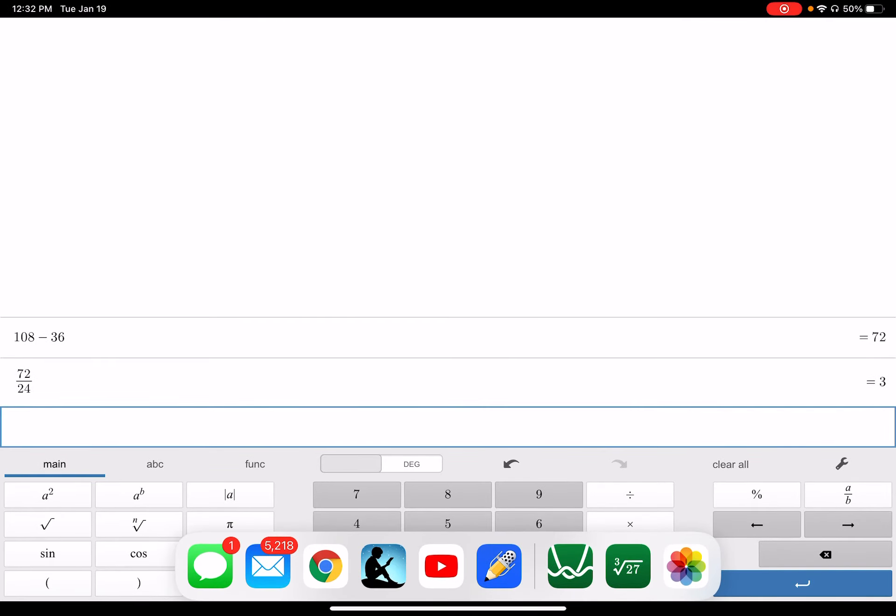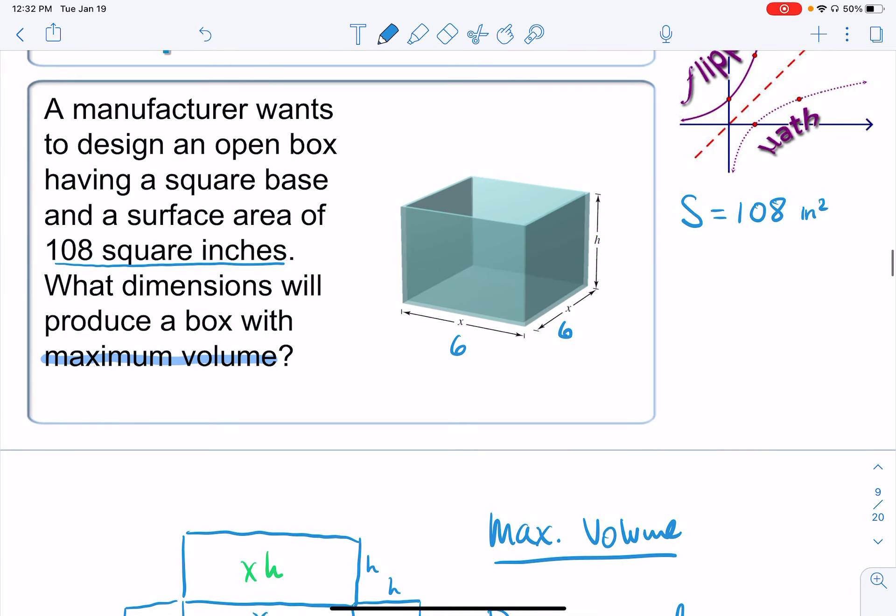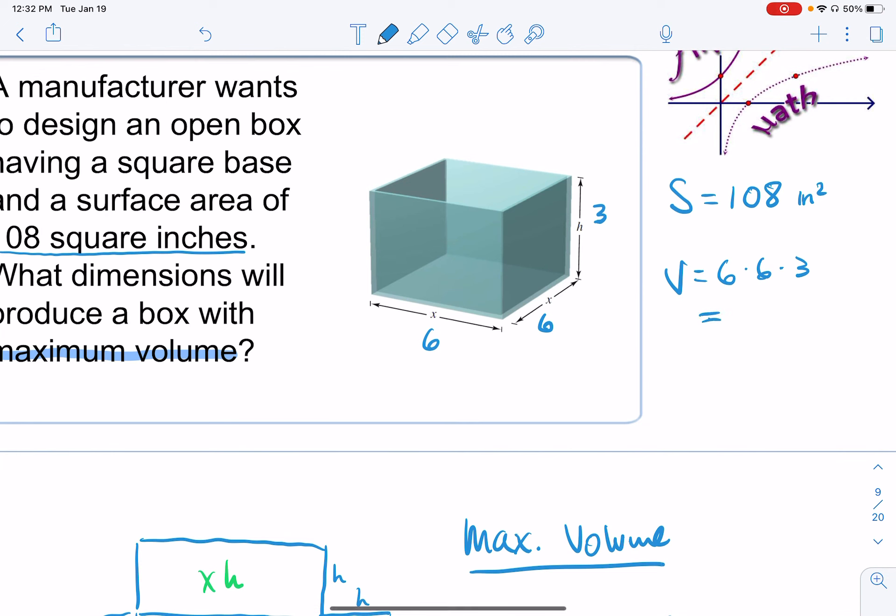And our volume, then, is going to be 6 times 6 times 3. 36 times 3 is 108 inches cubed.